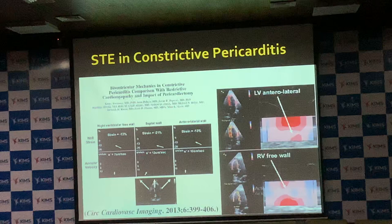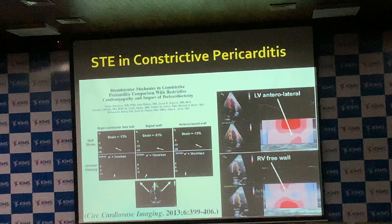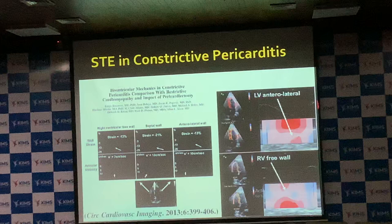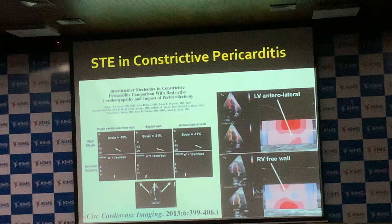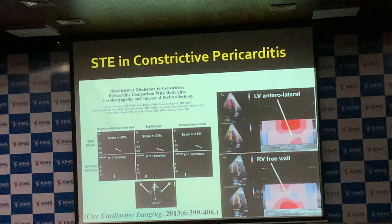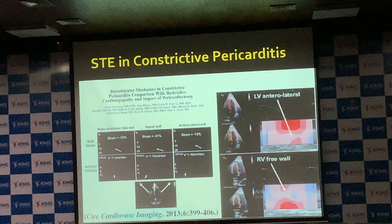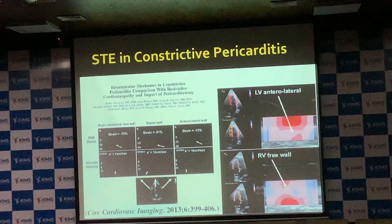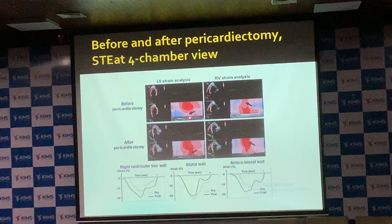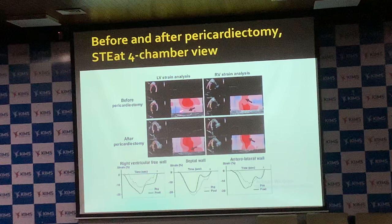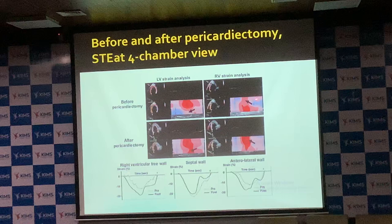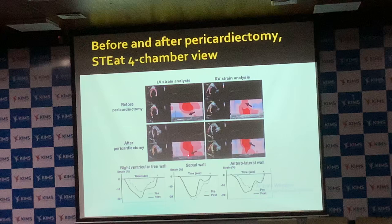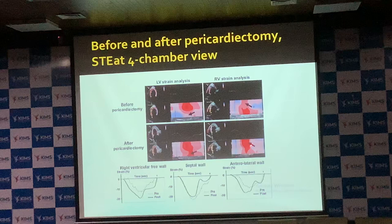Speckle tracking imaging in constrictive pericarditis shows absence of strain in the RV free wall and AV groove pre-operatively, with good strain returning post-pericardiectomy. Constriction is most commonly seen at the free wall — particularly the AV groove area on the lateral side, where fluid gravitates after pericardial effusion. Parametric carpet images nicely compare pre- and post-operative strain.